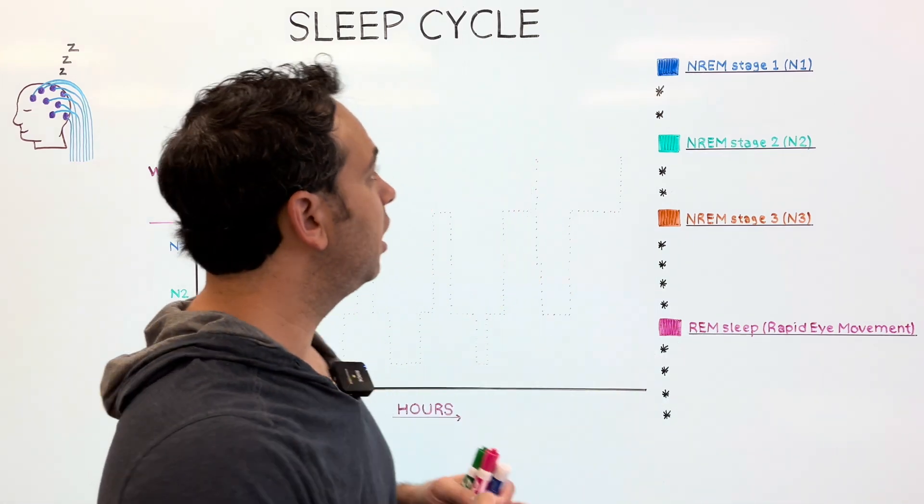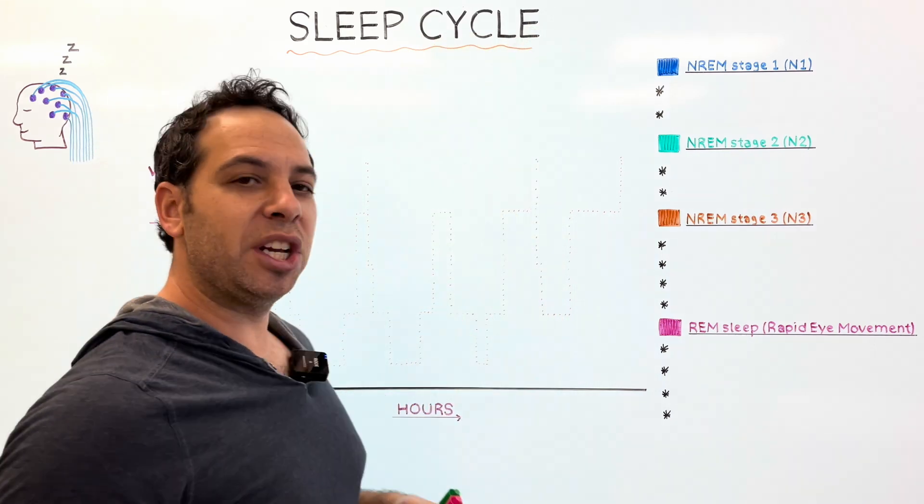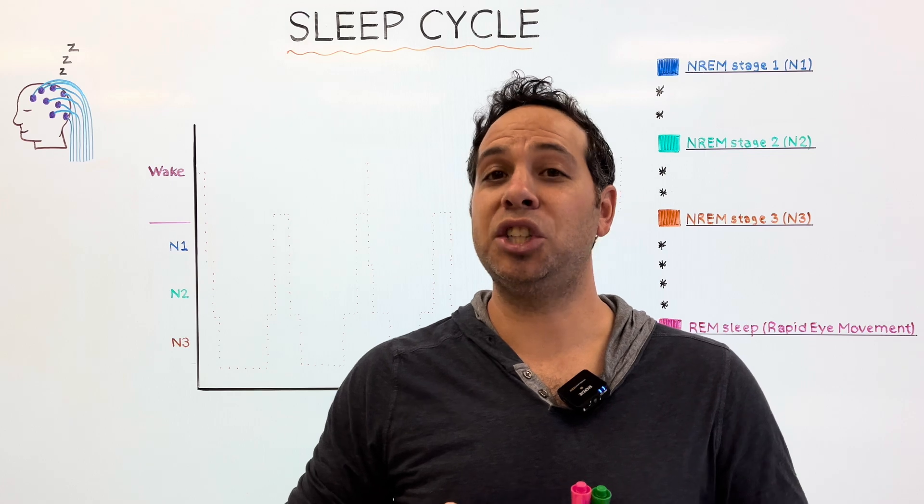All these experiences together produce what we call the sleep cycle. So in this video, we're going to break down the sleep cycle and examine what happens in the brain during a good night's sleep.